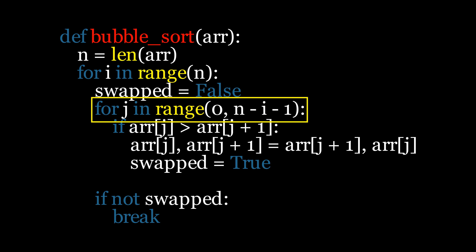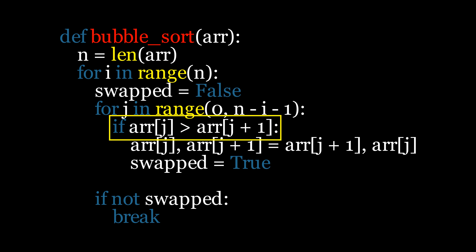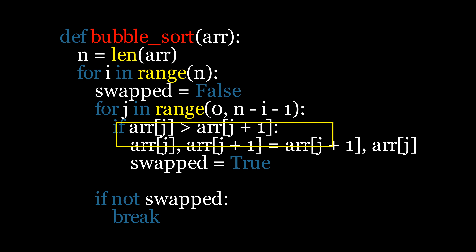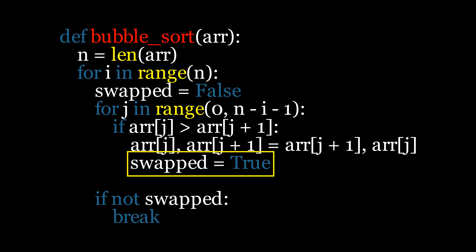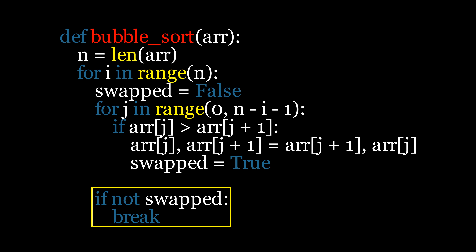We then use a nested loop that runs from the beginning of the array to the last unsorted position. Pause this video and think about why the loop runs to n minus i minus 1. Within this loop, we compare each pair of adjacent elements. If the previous element is greater than the next, we swap them and set the swapped variable to true. After the nested loop completes, we check the swapped variable. If no swaps were made, we break out of the outer loop early, as this indicates the array is already sorted.